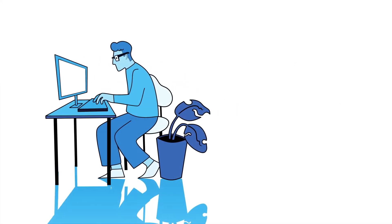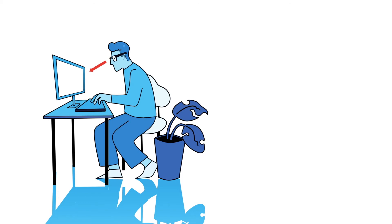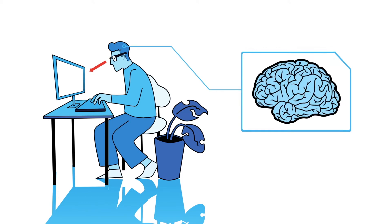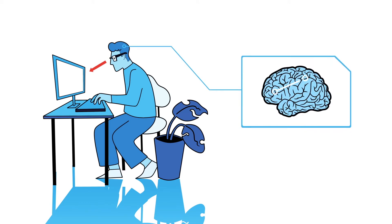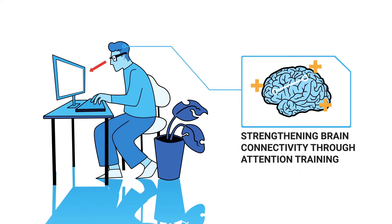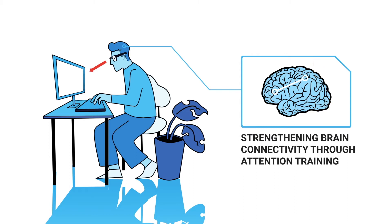Where we look and where we are planning to look is where we are placing our attention. The Attention Arcade leverages that connection to train attention skills and get several areas of the brain working together more effectively. Games are controlled using only your eyes, and each game trains different aspects of attention.